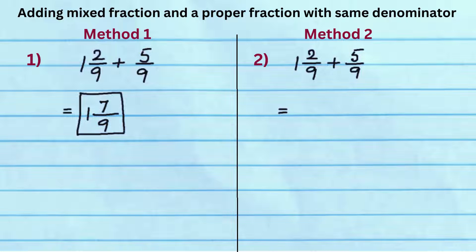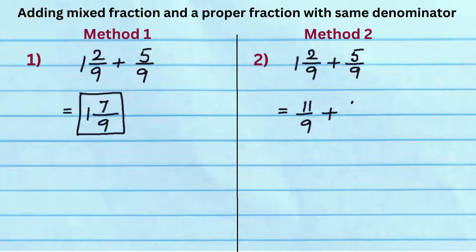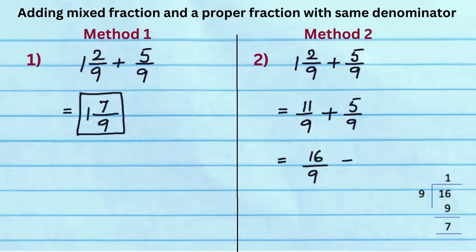In method 2, first convert the mixed fraction to an improper fraction. We rewrite 1 and 2 ninths as 11 by 9, and add 5 by 9 to it. Add numerators 11 and 5 to get 16, and write denominator as 9. Since 16 by 9 is an improper fraction, simplify it to get 1 and 7 ninths.